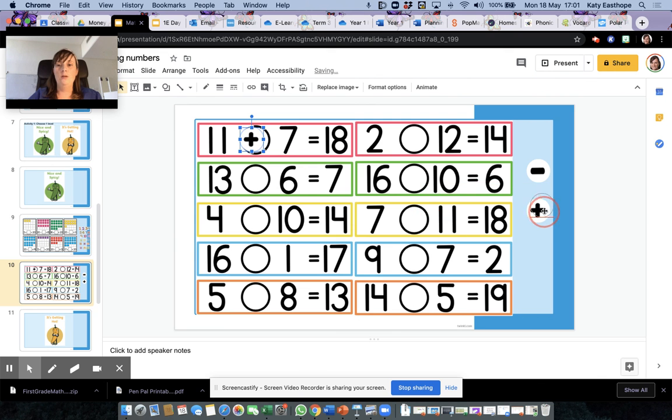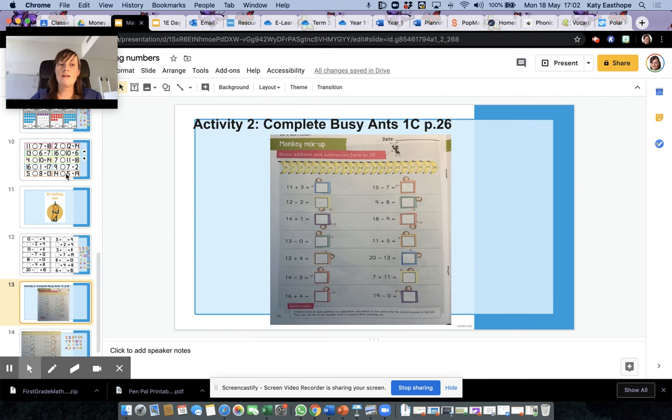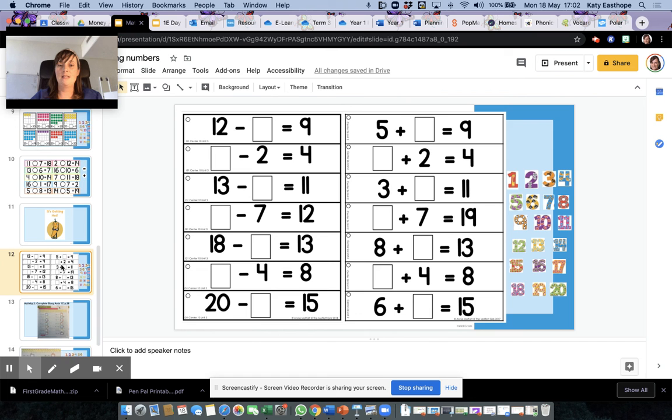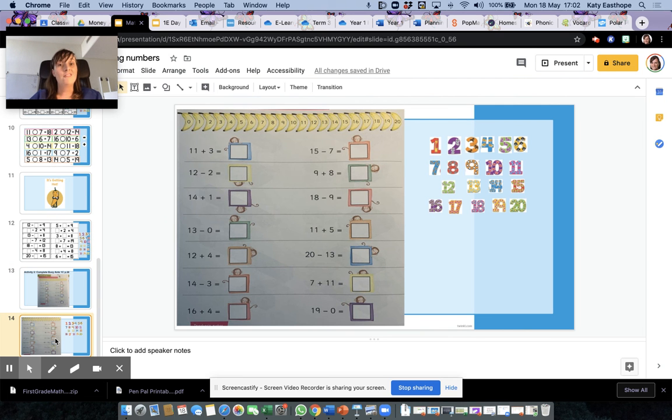So that is level one, or if you want to you can just practice some missing number sentences. We've got subtractions and plus, and these are in different orders, different places. Doesn't matter, we can still use our methods to help us. Then your second activity today - you only have to do one of those slides. Now the second activity's in your Busy Ants book 1C. If you don't have a Busy Ants book, you might want to do just the slider activities or I've made it for you.